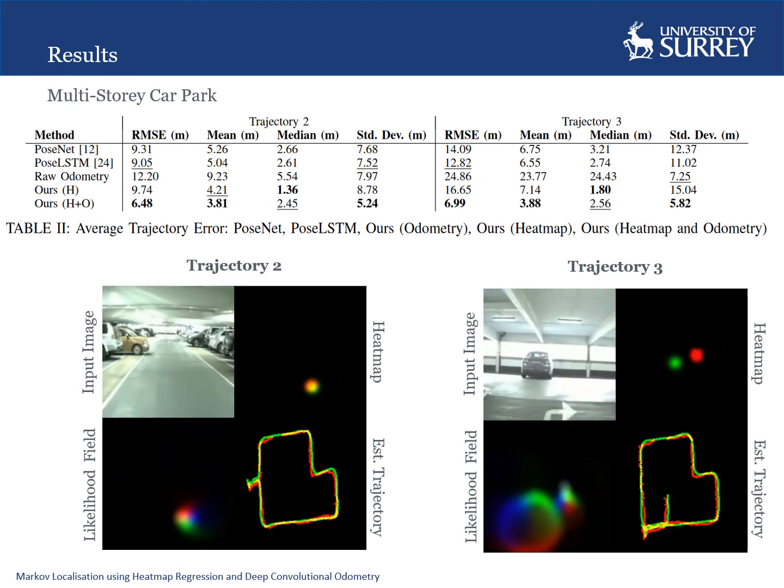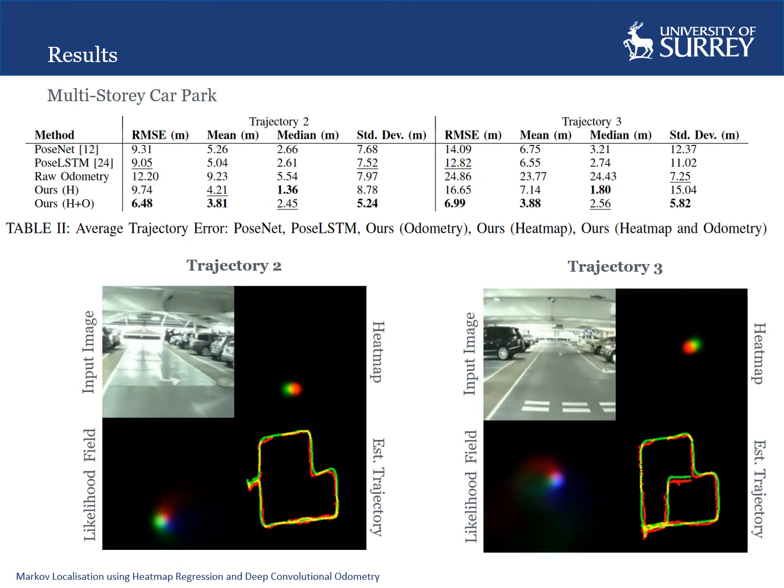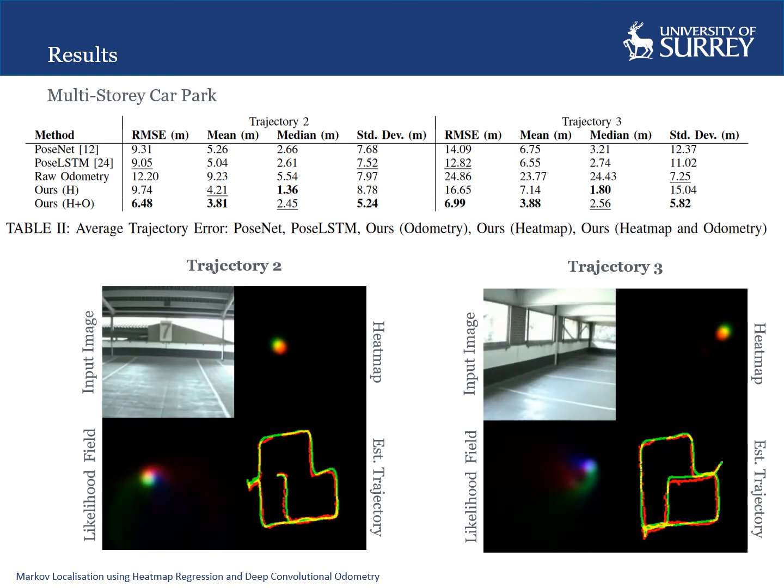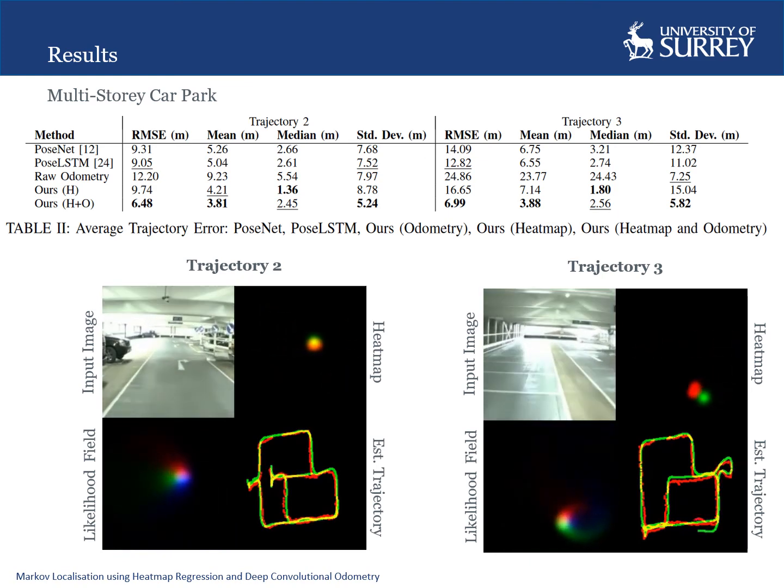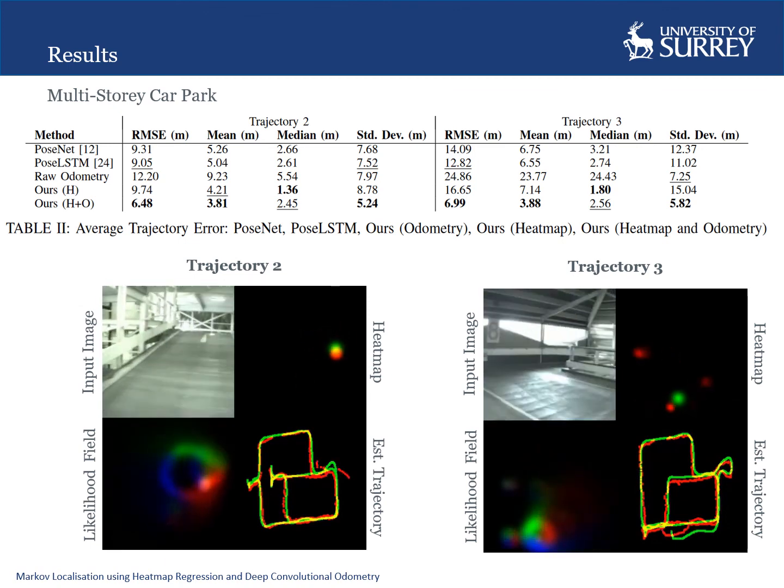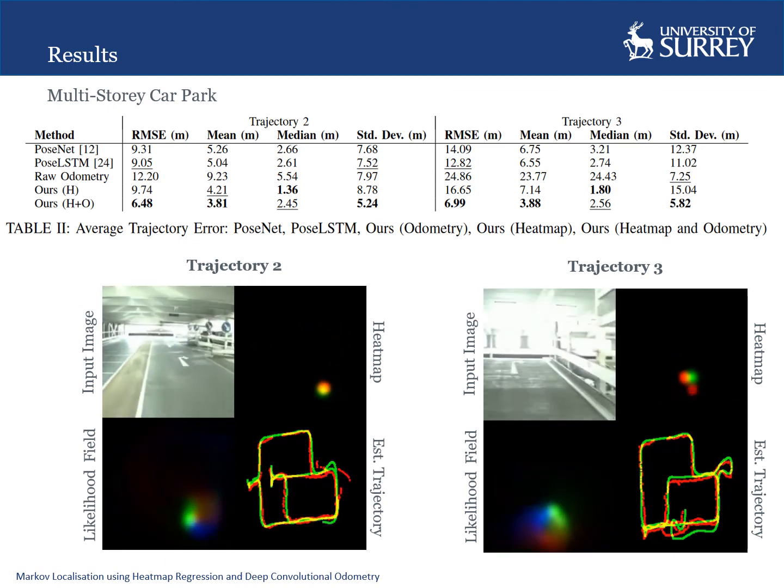Quantitatively, both our heatmap regressor and the combined regressor and convolutional odometry outperform the state-of-the-art. Qualitatively, we can see that our method is robust to mislocalizations by the heatmap regressor, while maintaining a likelihood distribution of the whole state space.